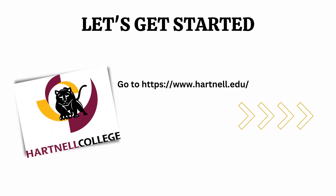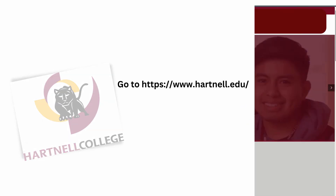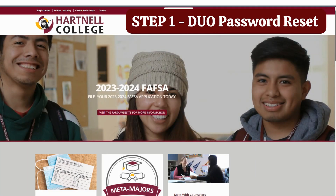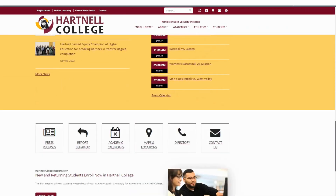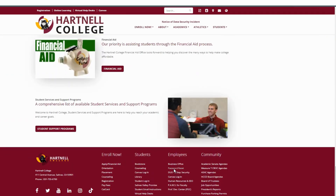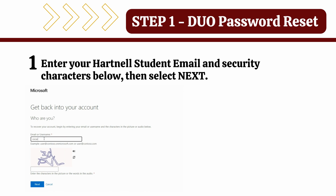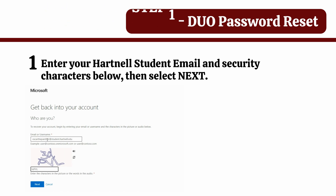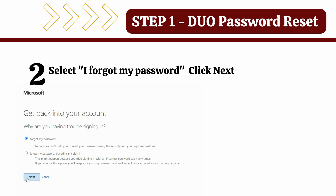Let's get started. Go to hartnell.edu, the Hartnell College main page. Scroll all the way down to the bottom of the page and click on the password reset link. Enter your Hartnell College student email as your username and enter the security characters below, then select Next. Select 'I forgot my password' and click Next.